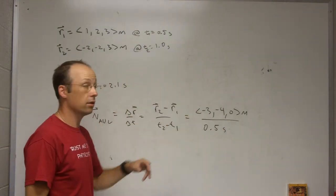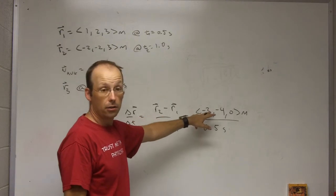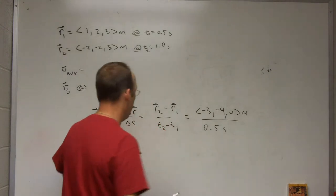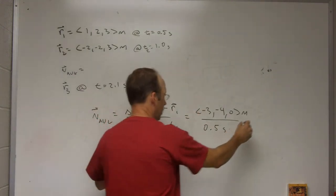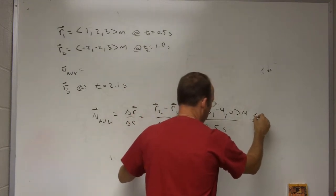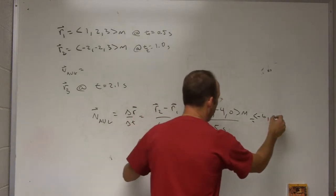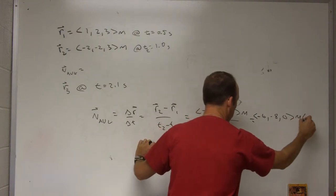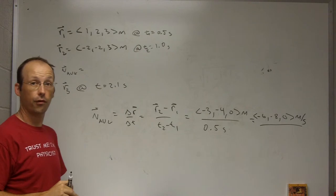Okay, so now I can do this division. I'm dividing a vector by a scalar. So that means I divide each piece, just checking the mic, each component by that scalar. So this is going to be equal to negative 3 divided by 0.5, it's going to be negative 6, negative 4 divided by 0.5, it's going to be negative 8, and then 0. So there's my average velocity. Fun, right?